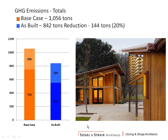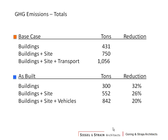Here's the total: the base case is just over 1,000 tons and the as-built was close to 850 tons — about a 20% savings. That was calculated after we built the building. If we could have done this analysis before building, we might have been able to select some even lower-carbon materials. But it shows the kinds of reductions that are readily achievable in a project. If you just take the buildings, we had about a 32% reduction. Buildings plus site yields a smaller reduction, and adding vehicles gets us to 20% overall.